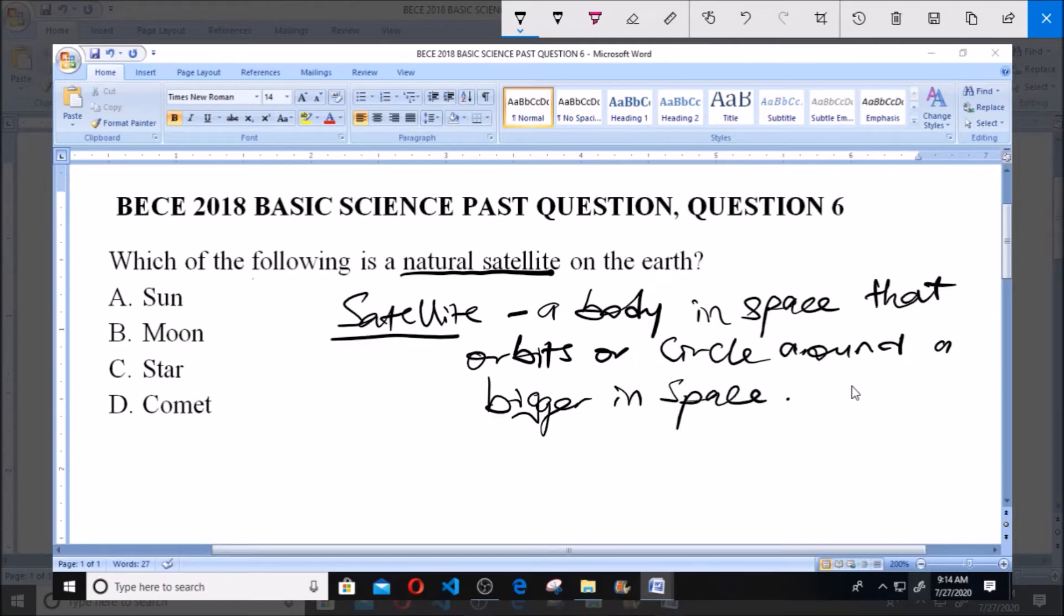Now we are asked to find the natural satellite of the earth. Like we know, the earth is one of the planets, and this earth is a body in space. So we have to look for the natural satellite of the earth.